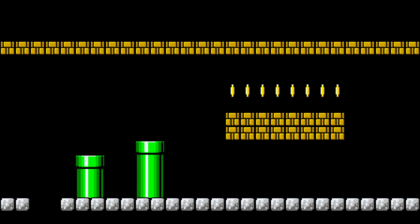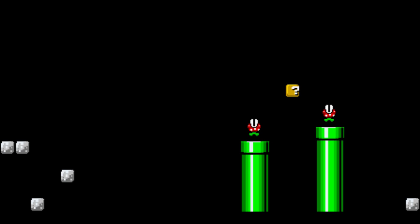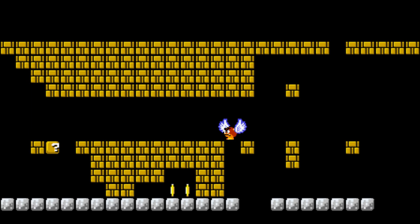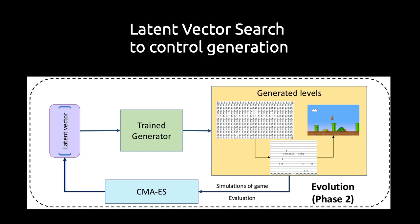We also see quite some variety, and also a definitely unplayable level near the end of the slideshow. You might be happy that you can generate so many different levels, but you might want to make sure that you only present playable ones to a player. This is where latent vector search comes in. Our task is now to find an input or latent vector to give to the generator so it generates the level we want. We used a popular evolutionary algorithm called CMA-ES to find such vectors with different fitness functions.